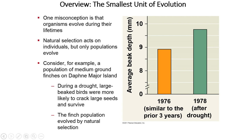Microevolution is the changes in allele frequency over time. For example, looking at how quickly evolution can take place — looking at how quickly populations can change from one point in time to another.